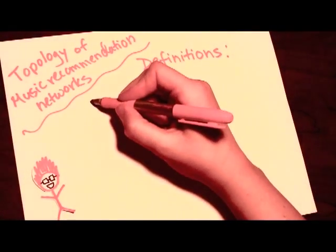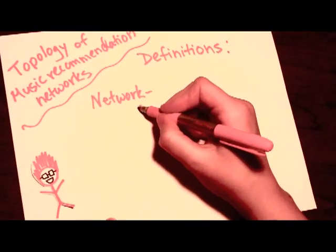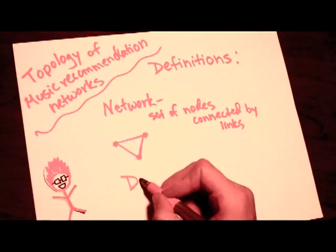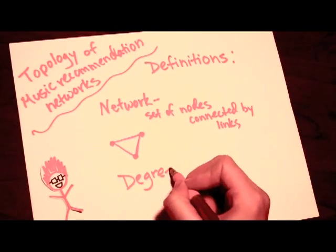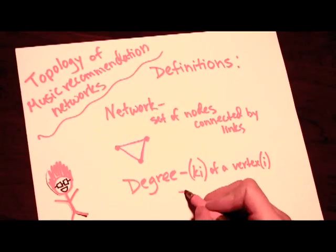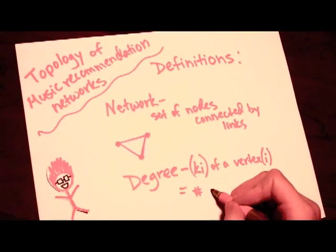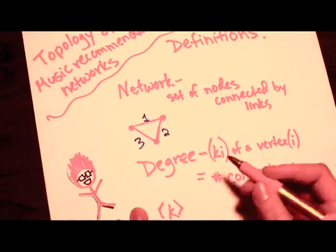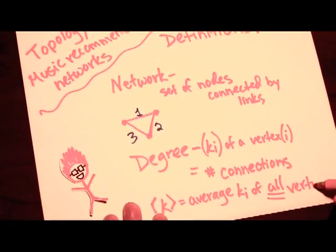Definitions. Network: A set of nodes represented by nouns. Degree, or k sub i, of a vertex is just the number of connections between them. Bracketed k is the average k sub i of all vertices.